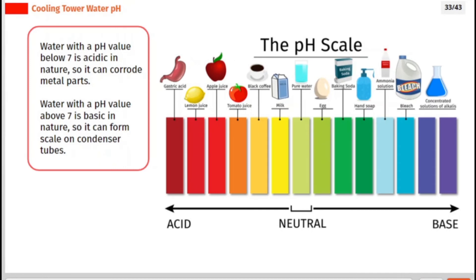Water with a pH value below 7 is acidic in nature, so it can corrode metal parts. Water with a pH value above 7 is basic in nature, so it can form scale on condenser tubes.